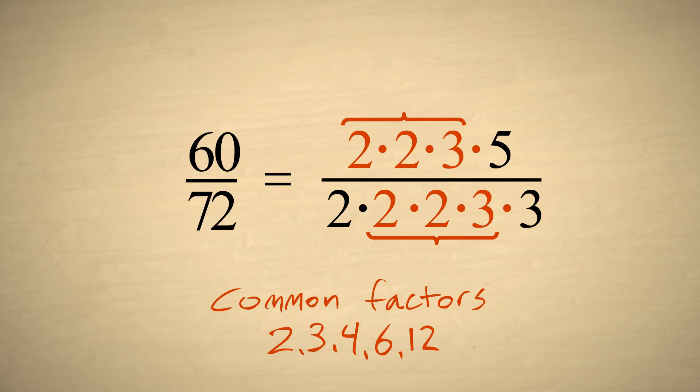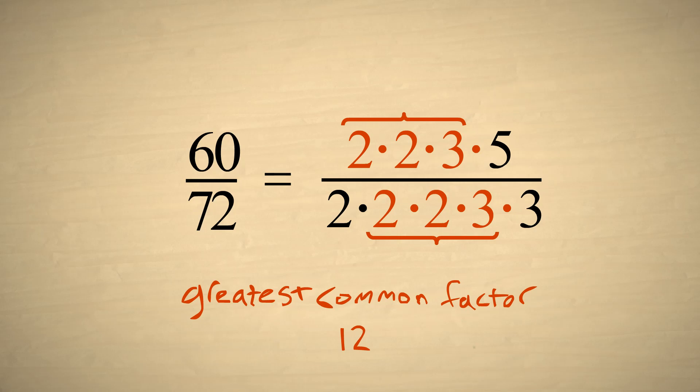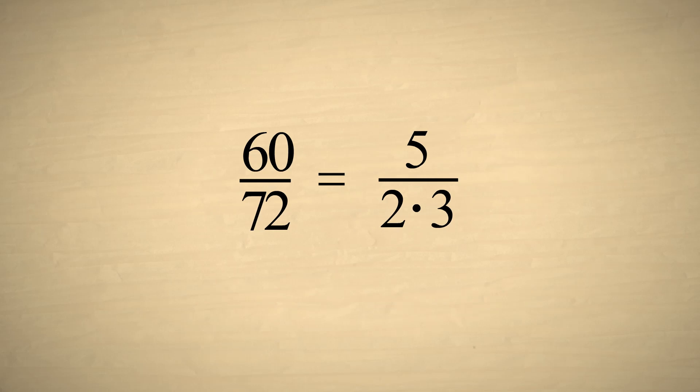The product of all the common prime factors is the greatest common factor. In this example, the greatest common factor is twelve. And once we eliminate the greatest common factor, the fraction is reduced to its simplest form, which in this example is five-sixths.